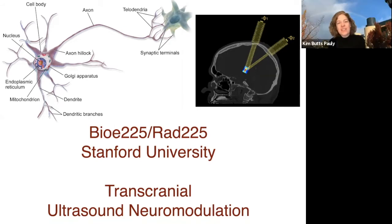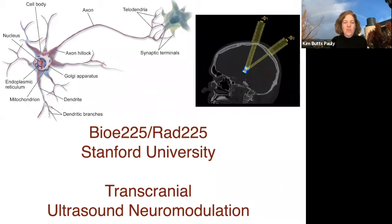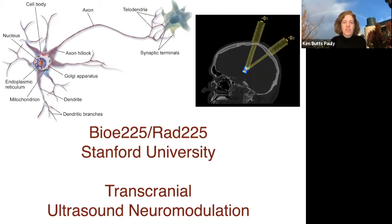So the point of this was to say we're going to talk about things all the way from the neuron all the way up to human level. There's a CT picture of a human and I sort of superimposed some ultrasound beams going through the skull. So there's so many things to talk about here in this class — from exactly what are we doing with action potentials to how do we do phase aberration correction for trying to get ultrasound beams across the skull. We're going to learn a lot about neurophysiology as well as a lot about physics of ultrasound.